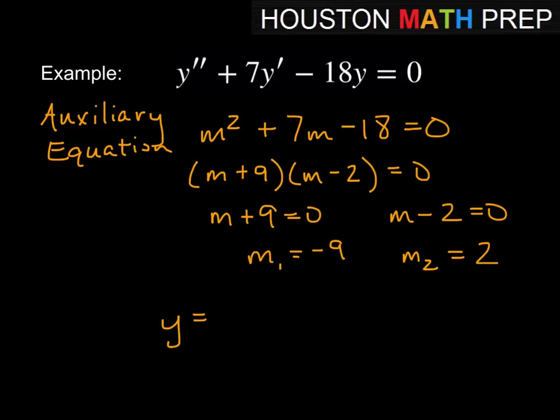And so we go ahead and plug that information in our solution. y = c₁e^(-9x) + c₂e^(2x).